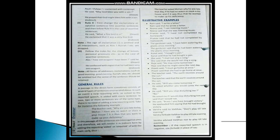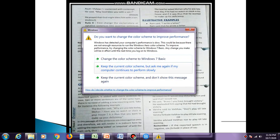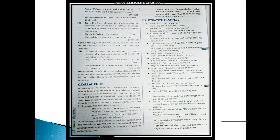Take for instance the following example. The teacher said, 'Why are you late today, Mohan? Have you no watch or clock in your house? Is it thus that you want to make up your deficiency?' Here the teacher has asked three questions in a row. All the sentences are interrogative, so we render it in indirect form by adding the reporting verb 'asked' or 'inquired of' just once. We will write: the teacher asked Mohan why he was late that day, if he had no watch or clock in his house, and if it was thus that he wanted to make up his deficiency.